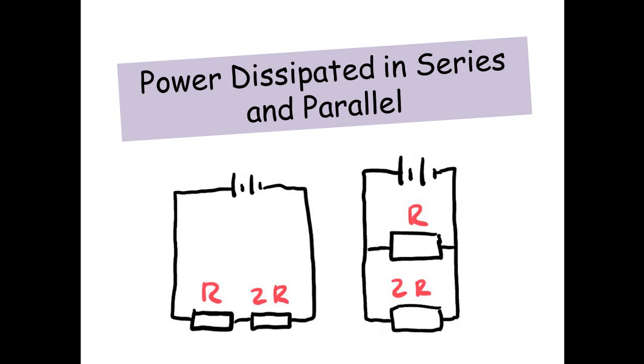On the right-hand side, we've got a similar circuit, but this time the resistors are set up in parallel. We've got resistance R and resistance 2R, and we're going to look at how power is dissipated in series and parallel.